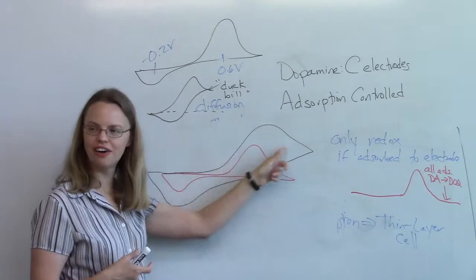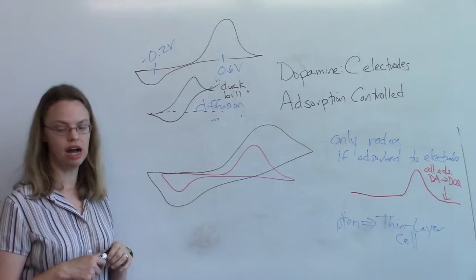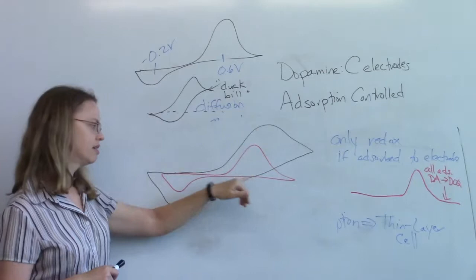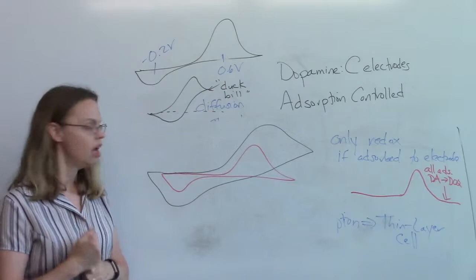That means diffusion's coming into play. So the shape of the CV tells you a lot. And so we've lost the duck bill because it's adsorption control. And if we get it back, then we know we've switched over to diffusion.